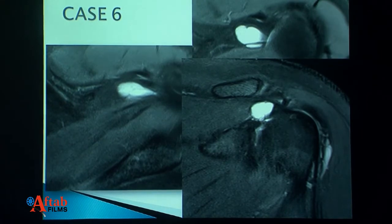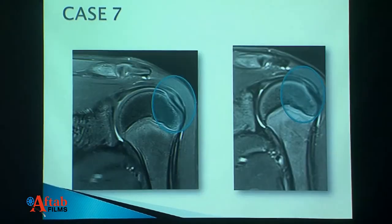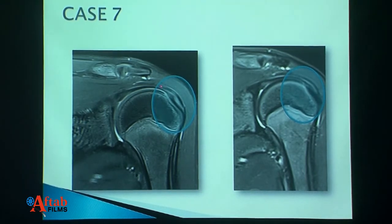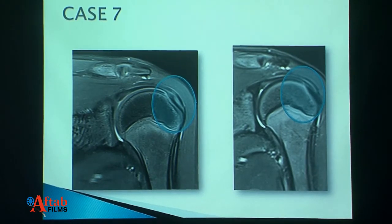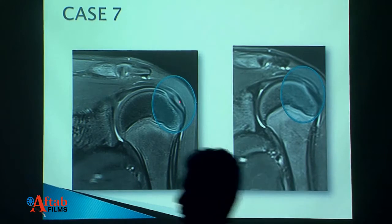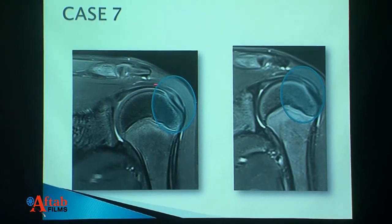Look at this patient — this is an immature skeleton, and when you see signal extending right up to the footprint of the supraspinatus in such an immature skeleton, it is nothing else but a fleshy insertion of the supraspinatus. There are no significant tendinous changes. As the patient ages, this migrates proximally and becomes less fleshy. This should not be labeled as pathological — you have to be very careful, especially in the immature skeleton.